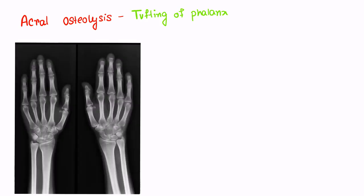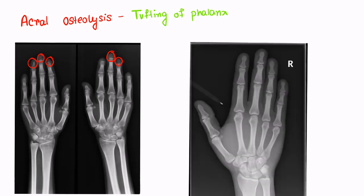The next finding is acral osteolysis or tufting of phalanx. It refers to resorption of the distal phalanx. The terminal tuft is most commonly affected. If you see the normal X-ray, you will understand the defect.